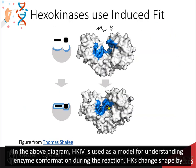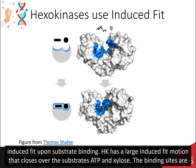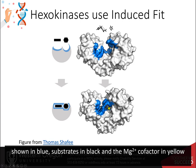In the above diagram, hexokinase 4 is used as a model for understanding enzyme conformation during the reaction. Hexokinases change shape by induced fit upon substrate binding. Hexokinase has a large induced fit motion that closes over the substrates ATP and xylose. The binding sites are shown in blue, substrates in black, and the magnesium cofactor in yellow.